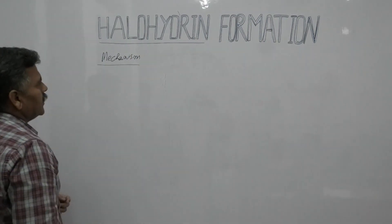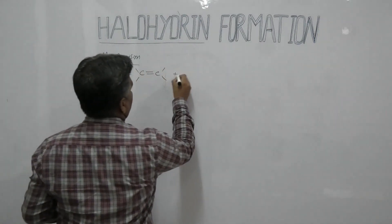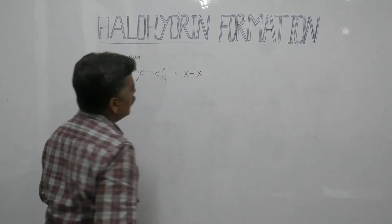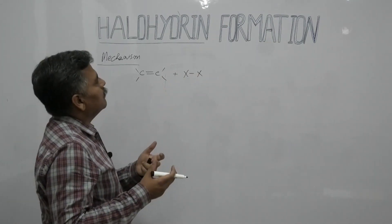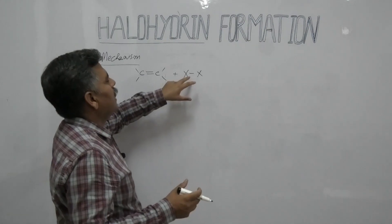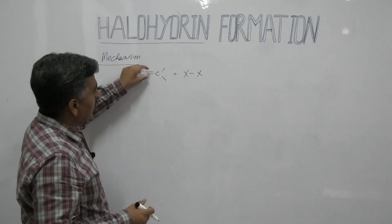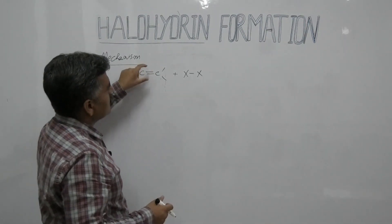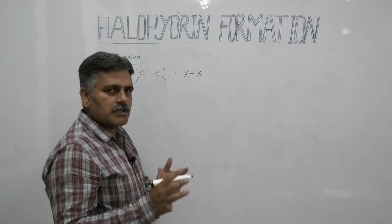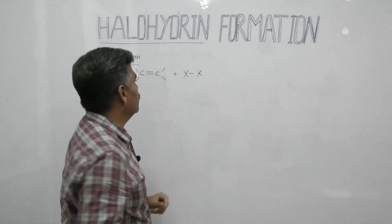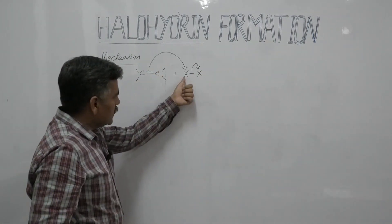Now let's discuss the mechanism of this reaction. We have a carbon-carbon double bond and bromine X₂. Due to the size of the bromine, there is a temporary dipole. When it comes close to the carbon-carbon double bond, the pi electrons further polarize the halogen, so one halogen acquires a partial positive charge and the other acquires a partial negative charge.